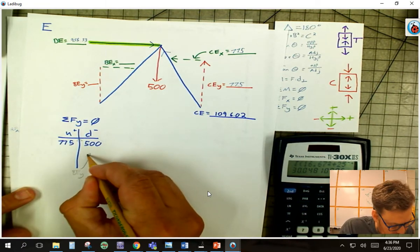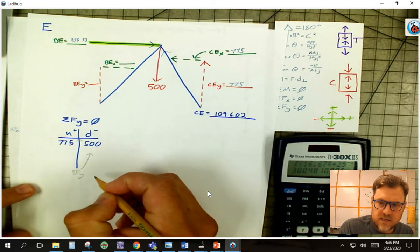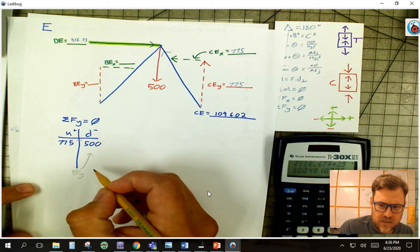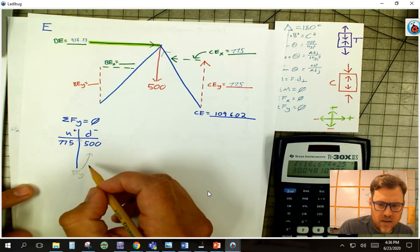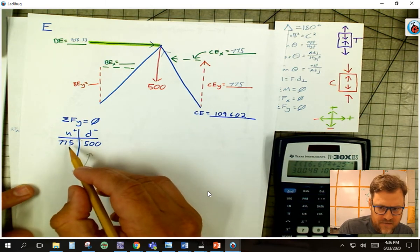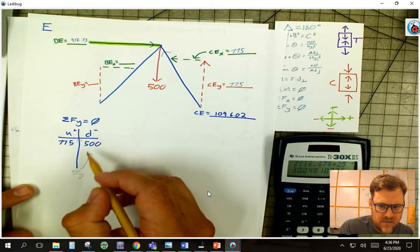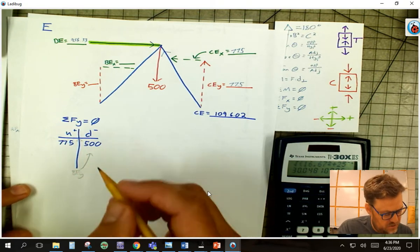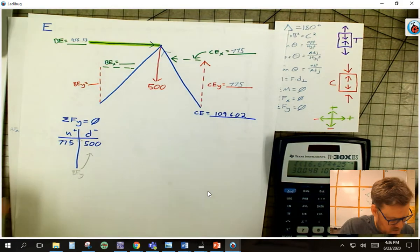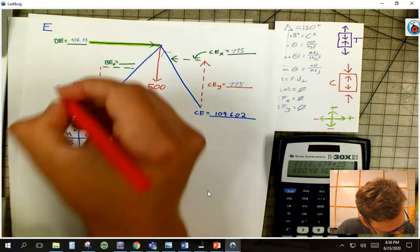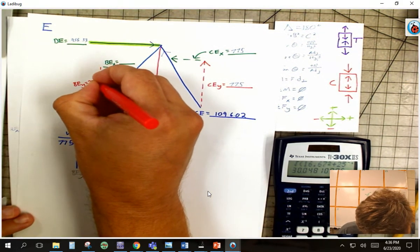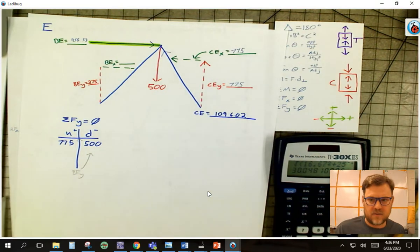Well, BEY's got to get over here to even this guy out. Okay, so we know that BEY is going to be your 775 minus 500, which should be 275. So I can put that right there.